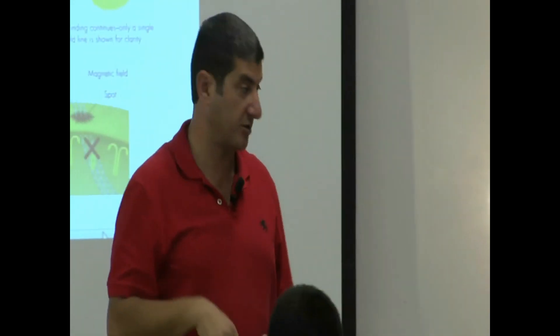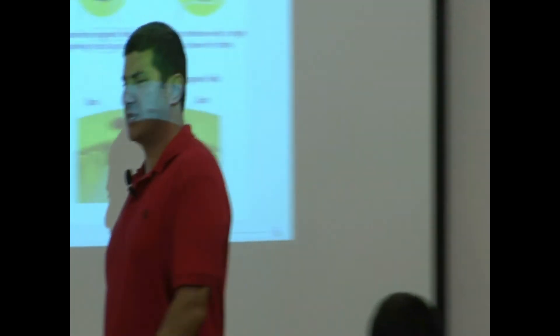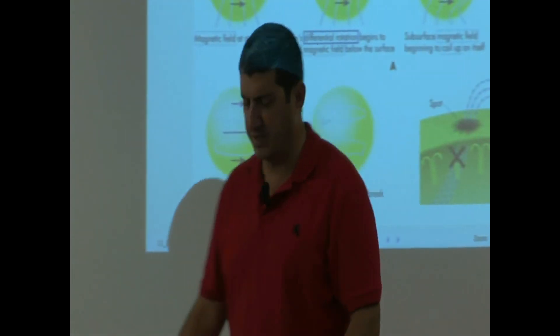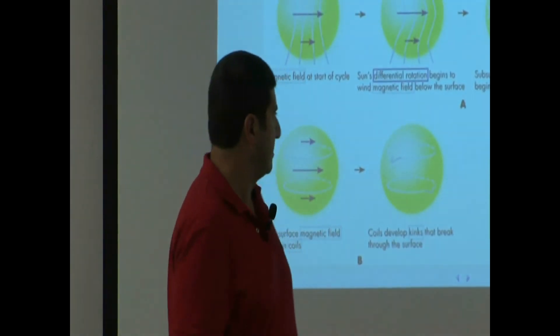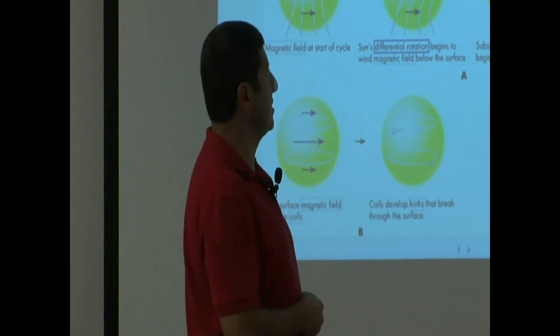So the magnetic cycle actually takes 22 years. It's pretty complex — you wouldn't think the sun has all this weird stuff going on, but it's a lot more complex than you would think.